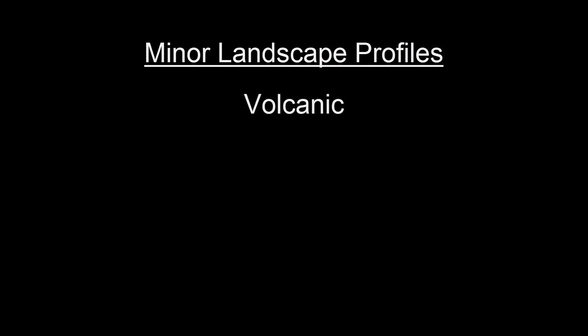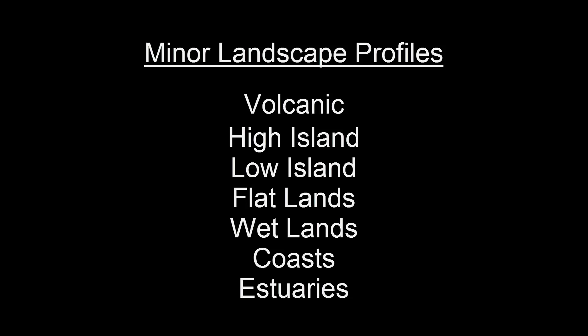We also dipped into some minor landscape profiles — minor in the sense that they are not as widespread, but when you think of something like volcanic you might not think of it as very minor. We also spoke about high islands, low islands, flatlands, wetlands, coasts, and estuaries, and how each one of those provides us with a unique opportunity to design in a way where we can realize the benefits of that area and still achieve the goals we want to have as a human race — to supply ourselves with the structure and food we need while still working with nature in the climate we're given.